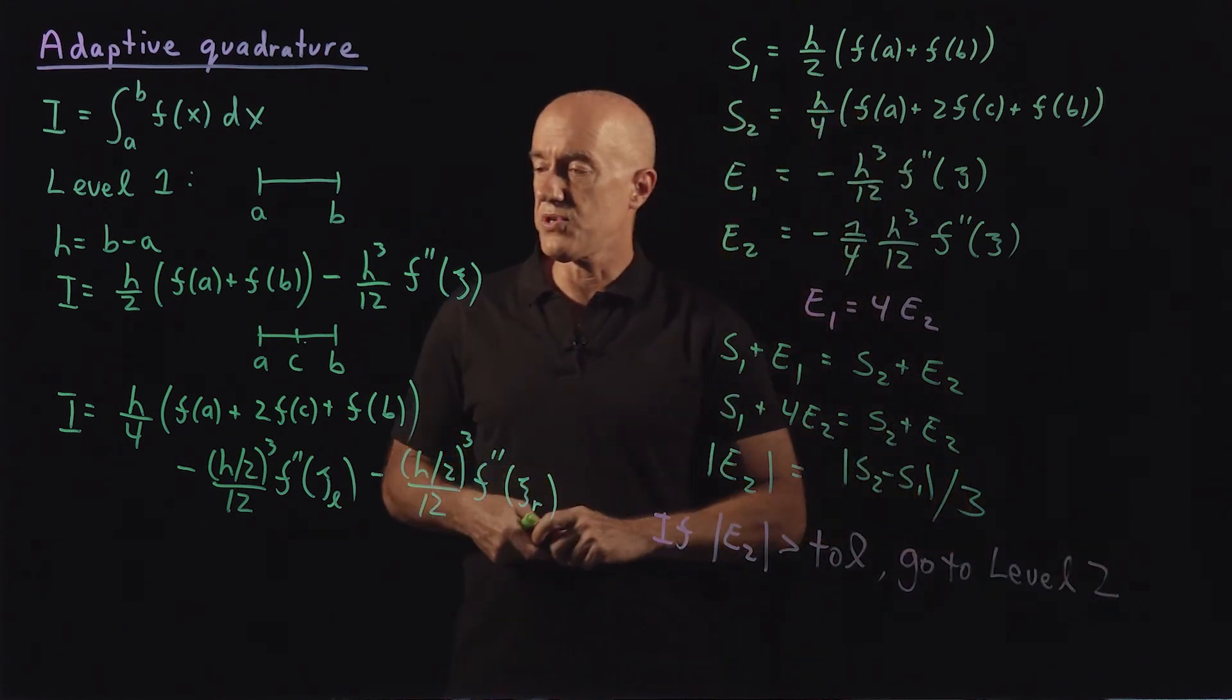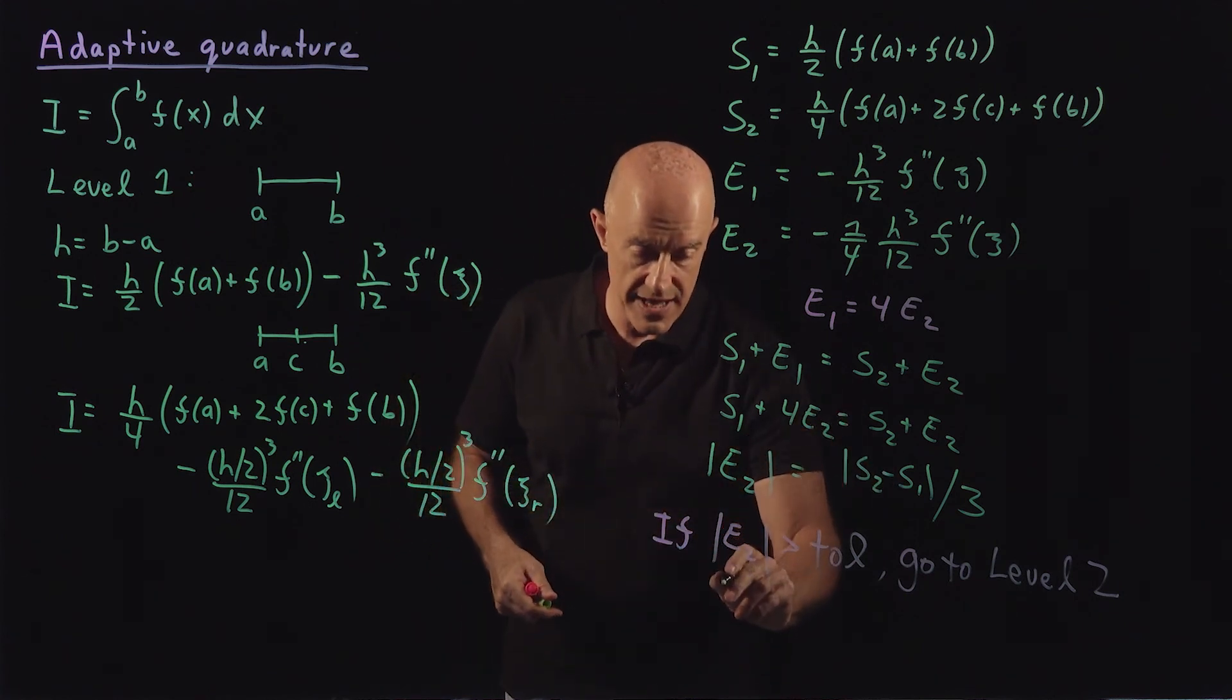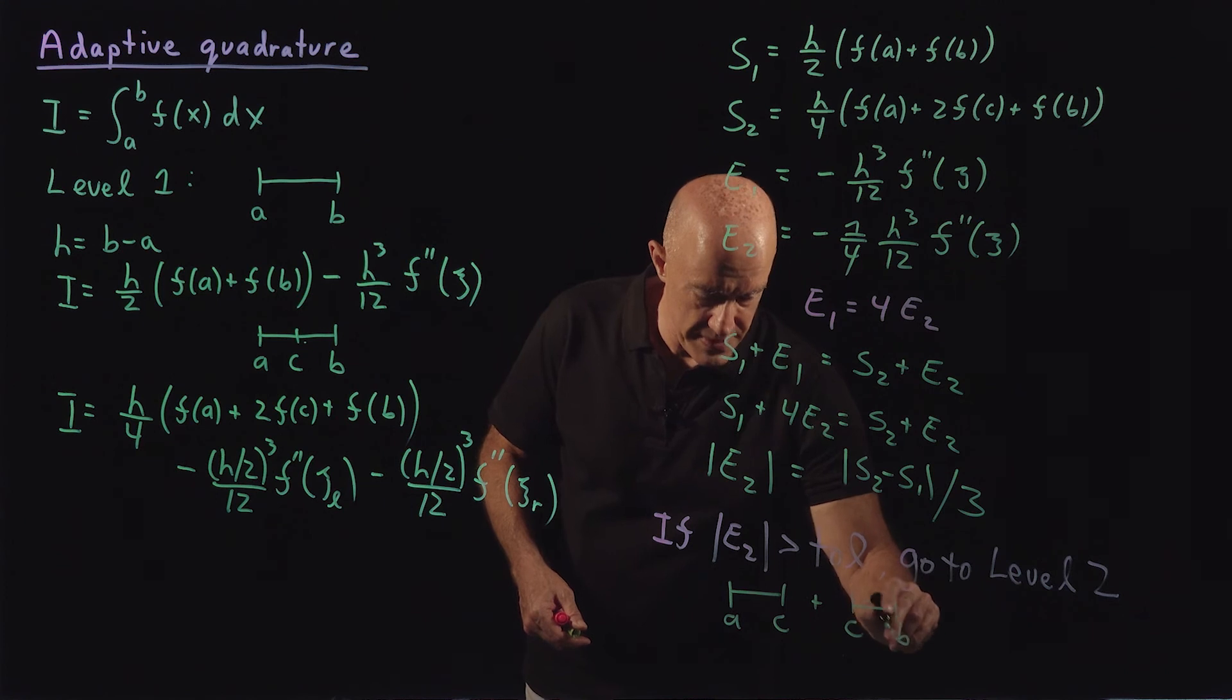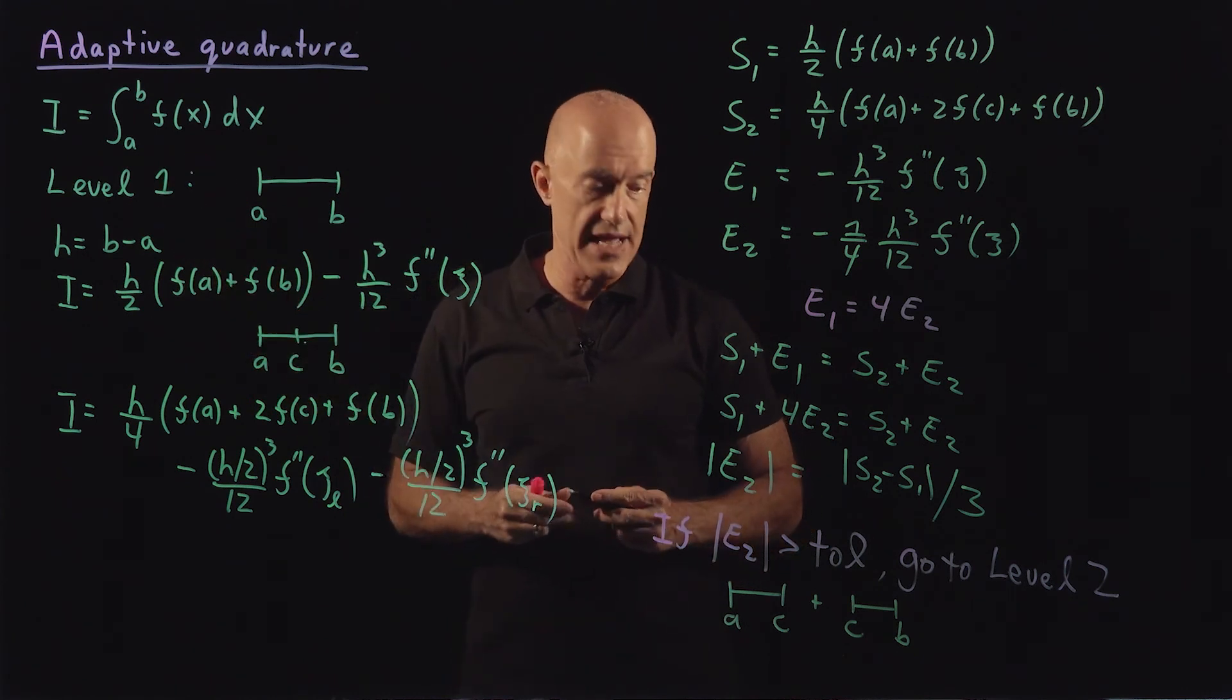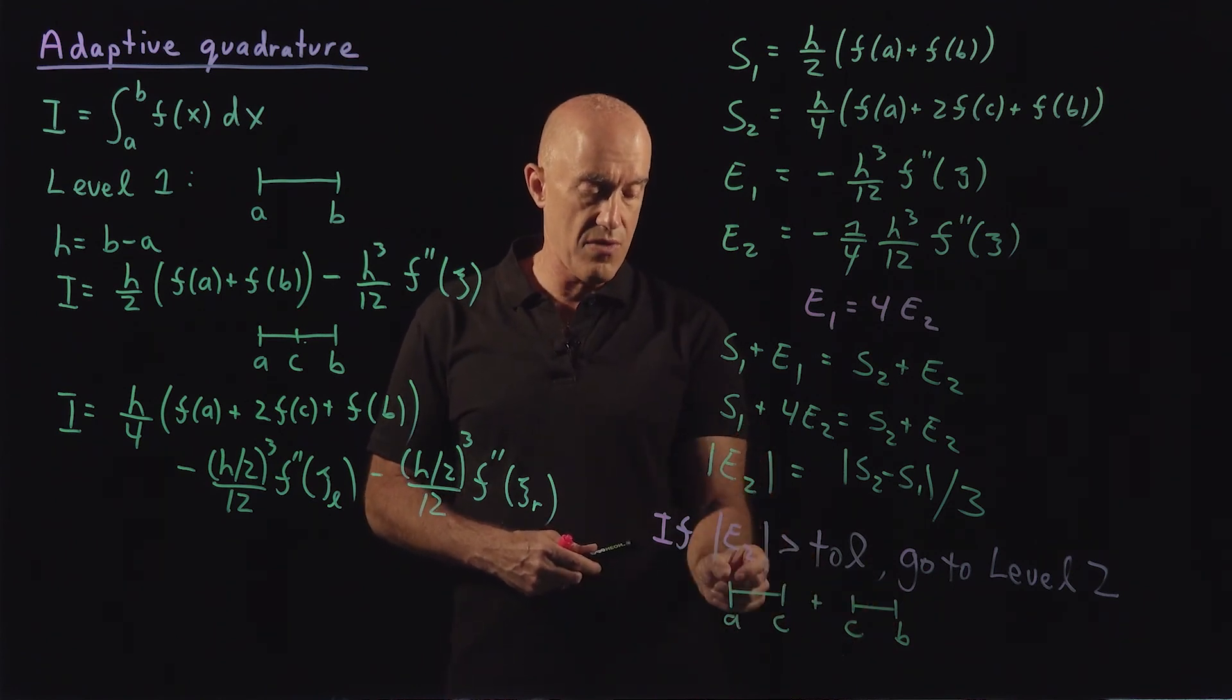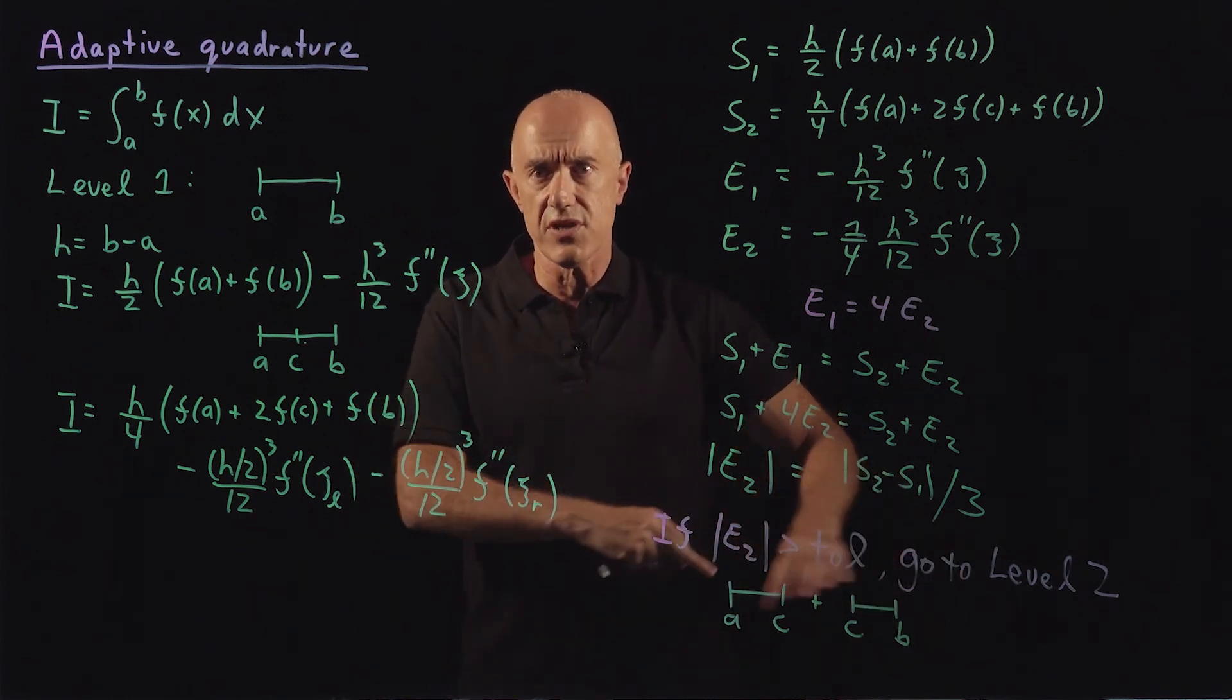Level two then treats the integral from a to c as one integral, and the integral from c to b as another integral. So here we have the integral from a to c plus the integral from c to b and treats both of these intervals independently in the same way that we did at level one. So we integrate using the trapezoidal rule here, and then we take a point in the middle and we integrate using two trapezoidal rules. We compare them and look at the error. And the same on the right interval. So both of these are done independently.